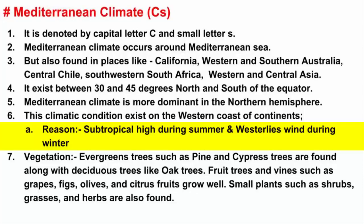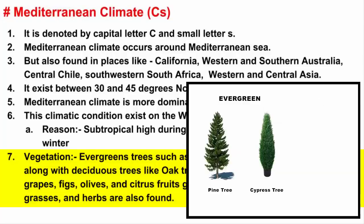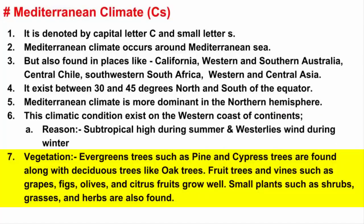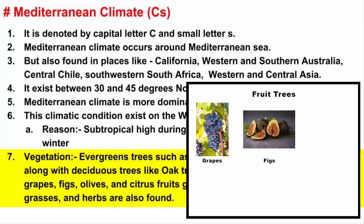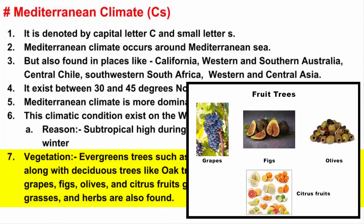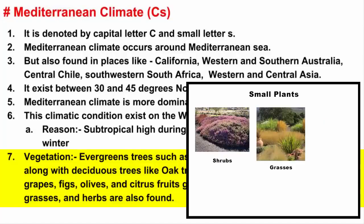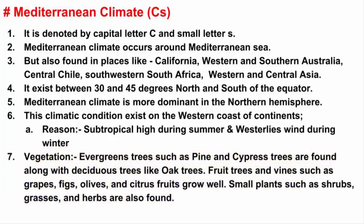When it comes to vegetation, plants in the Mediterranean climate are able to survive the long dry summers. Evergreen trees such as pine and cypress are found along with deciduous trees like oak. Fruit trees and vines such as grapes, figs, olives, and citrus fruits grow well in this climate. Other small plants such as shrubs, grasses, and herbs are also found in this climatic region.